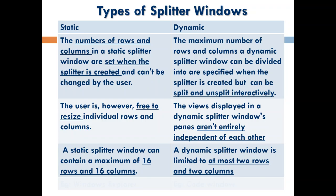The second point about static splitter window is that you can resize the panes. Once you have created rows and columns, you can resize them — they do not have to be uniformly the same size. Depending on the size of the document, you can resize your pan. You can create a maximum of 16 rows and 16 columns in a static splitter window.